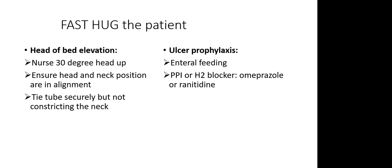Head of bed elevation is important. Position the patient at least at 30 degrees in a semi-recumbent position, ensuring that the head and neck are in alignment. Ensure the endotracheal tube is secure but not constricting the neck, which could reduce venous return. Ulcer prophylaxis is achieved with enteral feeding; you can add proton pump inhibitors or histamine-2 blockers.